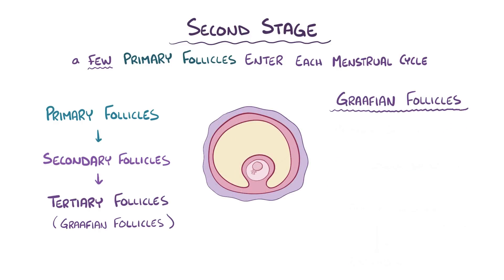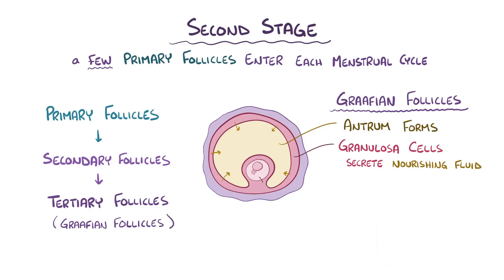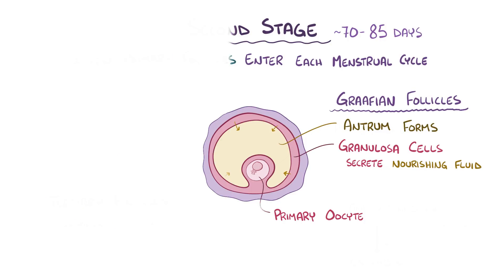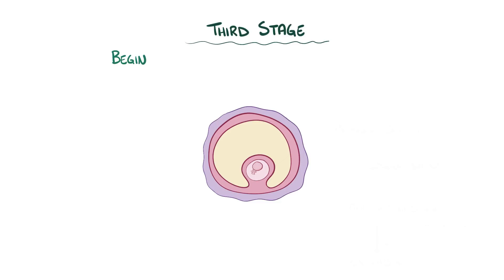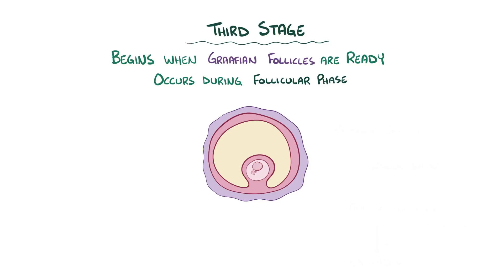In a Graafian follicle, a central cavity called the antrum forms within the follicle, and the granulosa cells secrete a nourishing fluid for the primary oocyte directly into the antrum. The second stage takes roughly 70–85 days and results in a few fast-growing Graafian follicles. The third stage of follicular development starts when the Graafian follicles are ready and occurs during the follicular phase of the menstrual cycle. So let's briefly switch gears and go over the highlights of the menstrual cycle to put that follicular phase into context.